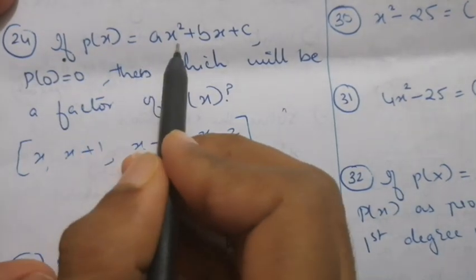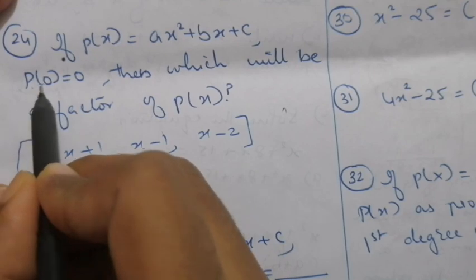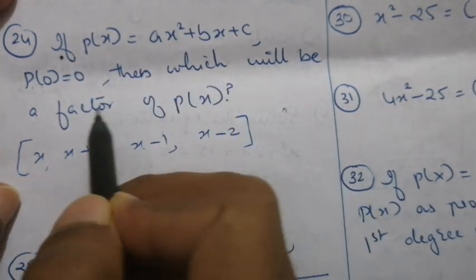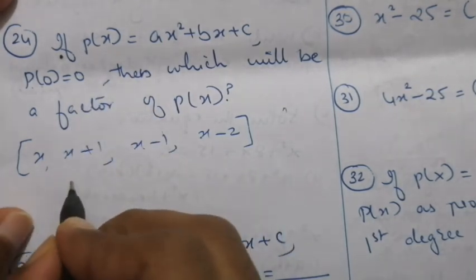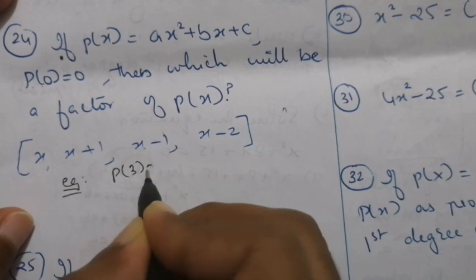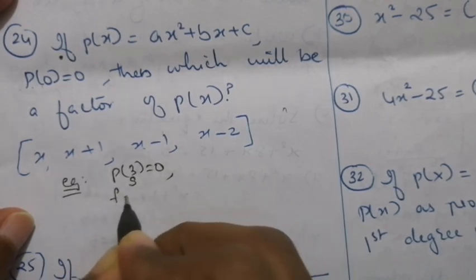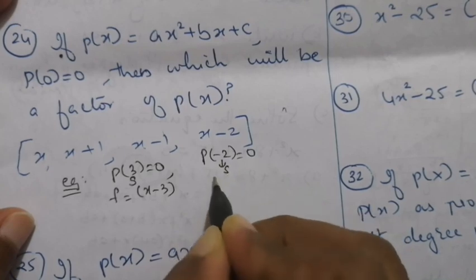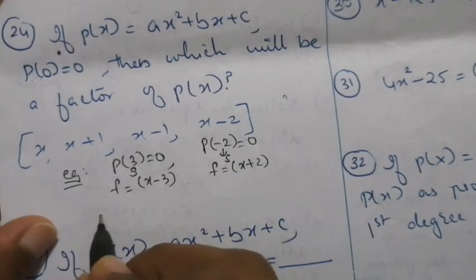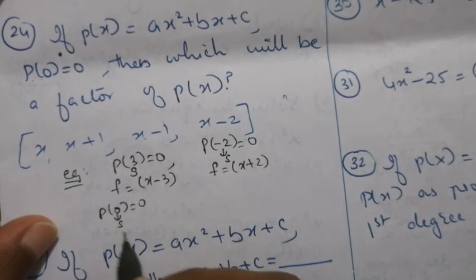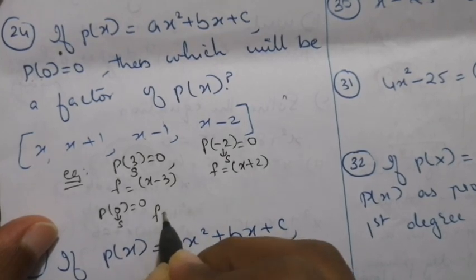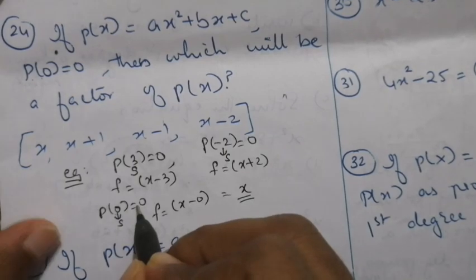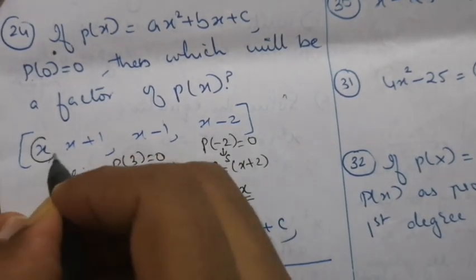Question number 24. If p of x equals ax squared plus bx plus c and p of 0 equals 0, which is a factor of p of x? For example, if p of 3 equals 0, then 3 is the solution and the factor is x minus 3. If p of minus 2 equals 0, the factor is x plus 2. Similarly here, p of 0 equals 0 means the solution is 0, so the factor is x minus 0, which is x. When p of 0 equals 0, the factor is x.